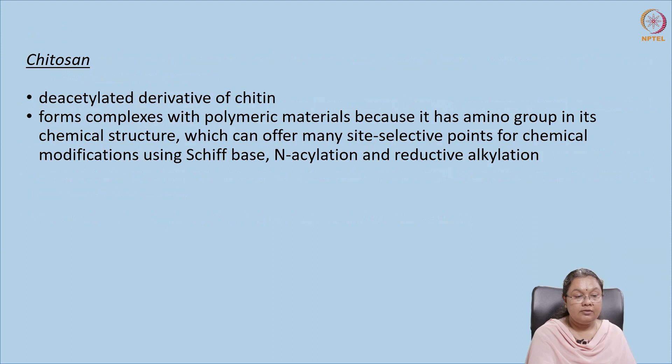Chitosan is another natural food additive and preservative. It is basically the deacetylated form of chitin. Chitin is commercially prepared from shrimp shell or crab shell, and these are deacetylated to form chitosan. The structure can be changed by different modifications like silylation or alkylation, which will enhance the properties of these food additives.